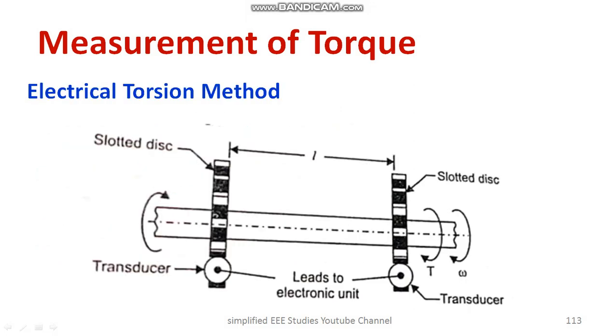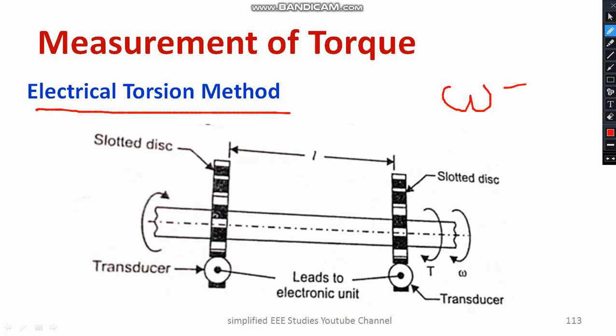For the electrical torsion method: we have a shaft — a mechanical part that may be connected to motors. The shaft is rotating at an angular speed omega, where omega equals 2 pi N by 60, and N is the speed in RPM. Our target is to measure the torque. A slotted disc is used, with shaded and non-shaded slots, and it is coupled with a suitable transducer and electronic measurement unit.